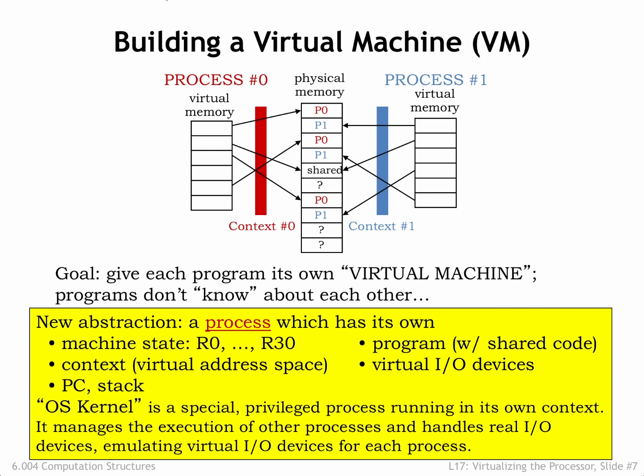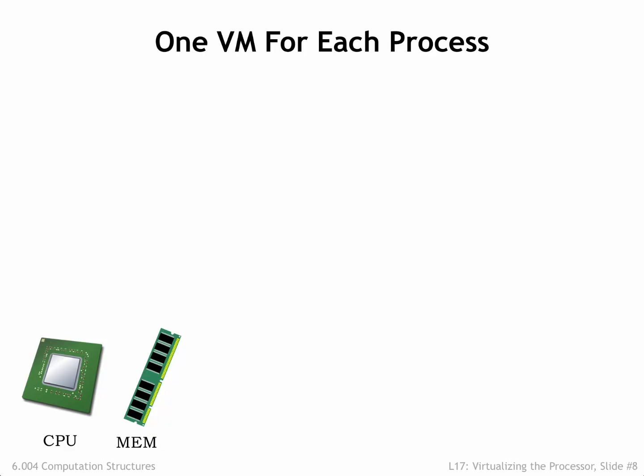In order to successfully implement processes, the OS must be able to make it seem as if each process was running in its own virtual machine that works independently of other virtual machines for other processes. Our goal is to efficiently share one physical machine between all the virtual machines.